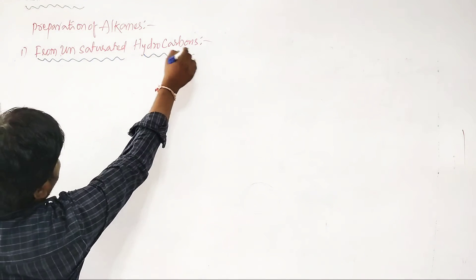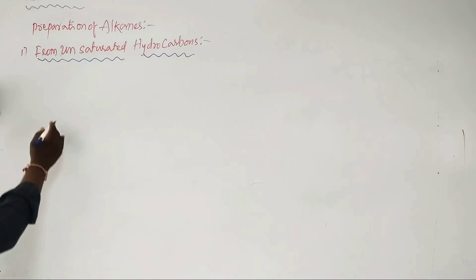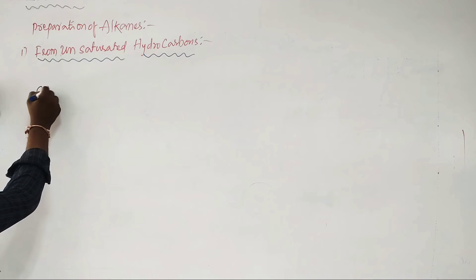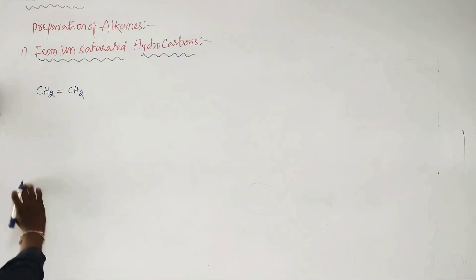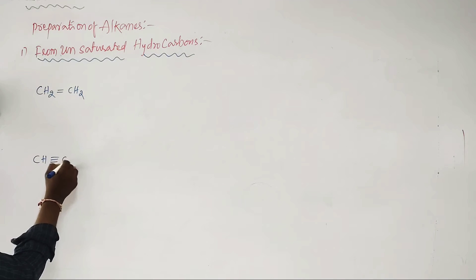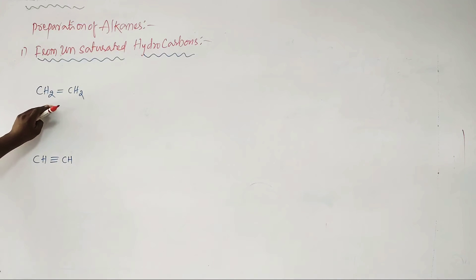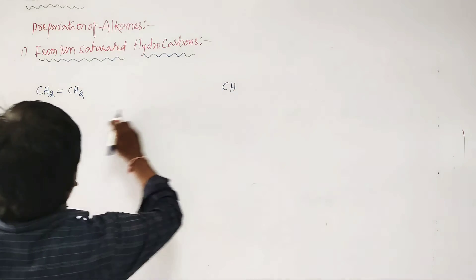Unsaturated hydrocarbons are alkenes and alkynes. For example, CH2=CH2 is an alkene and CH≡CH is an alkyne. From these unsaturated hydrocarbons, alkanes are obtained as the product.